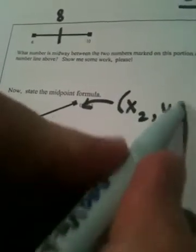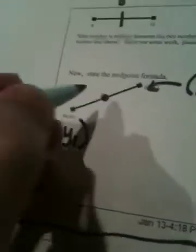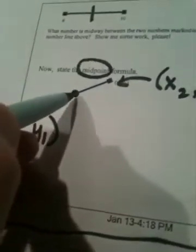And for the end point of this segment, I have x sub 2, y sub 2. And I want to know what the coordinates are of the midpoint, which is the point that's midway between the two of them.